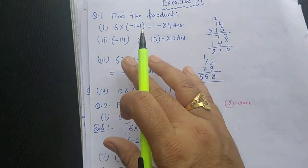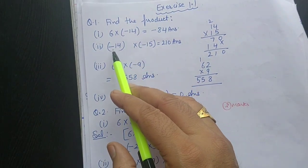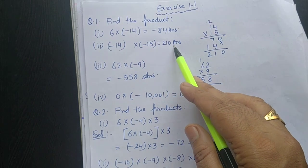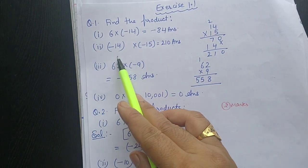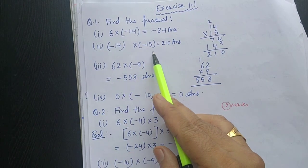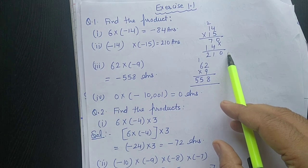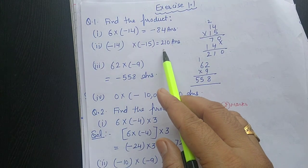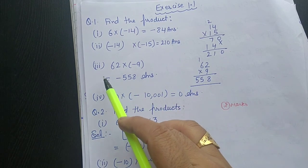The second one: both numbers are negative, so the answer will be positive. Just multiply 14 with 15. Here I show the division multiplication also. We will get 210 as the answer.